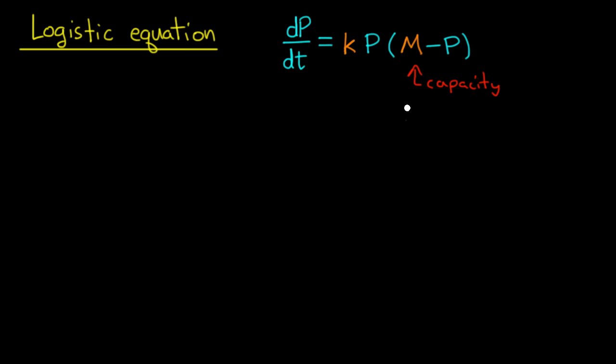The logistic equation is a model for population growth. Despite its fairly simple appearance, it actually works very well as a model for realistic situations such as the growth of a population of a country over the course of 100 years.